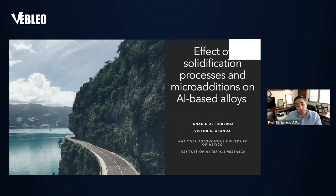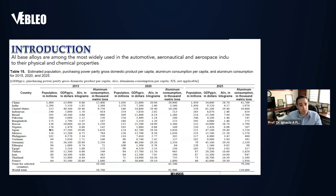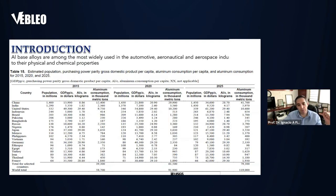Why aluminum? Basically, the consumption of aluminum is widely known. China contributes with the top consumption of aluminum with 12,000 tons, followed by India and the United States. This basically comes with the idea of studying aluminum but in a different part of the phase diagram.